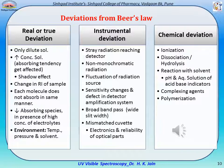Instrumental deviation involves stray radiation, non-monochromaticity of radiation, fluctuation of the radiation source, defects in the detector amplification system, broadband or wide slit width, mismatched cuvettes, and electronics and reliability of optical parts. Chemical deviations are due to ionization, dissociation, hydrolysis, reaction with solvent, effect of pH, complexing agents, and polymerization.